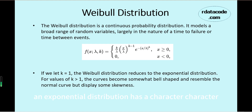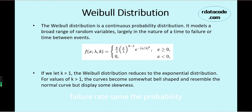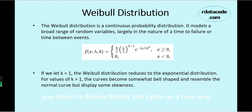Exponential distribution has a characteristic called memoryless failure rate. What is memoryless failure rate? For example, you have an old machine and a new machine, but these two machines have the same failure rate — the same probability distribution of time until the next failure. This is called memoryless. For instance, you have a light bulb you have used for one year, but from this point, this light bulb is the same as a new one. So this is memoryless.